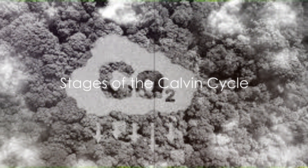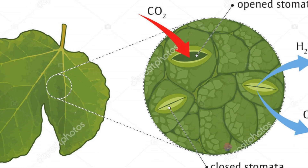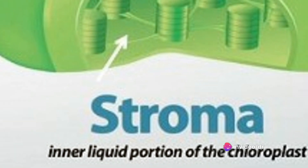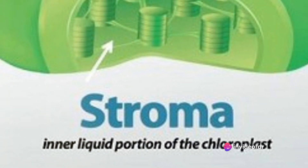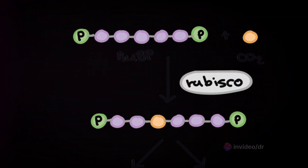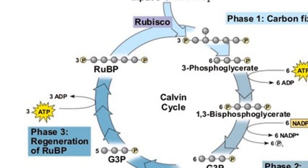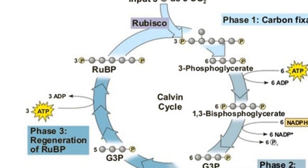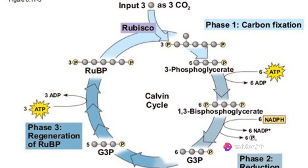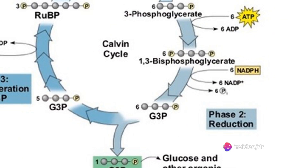The reactions follow as CO2 enters the chloroplast through the stomata and diffuses into the stroma of the chloroplast. Rubisco and RuBP are already present in the stroma. Rubisco catalyzes a reaction between RuBP and CO2, creating a 6-carbon compound which immediately splits into two 3-carbon compounds called 3-phosphoglycerate. This process is called the carbon fixation step.